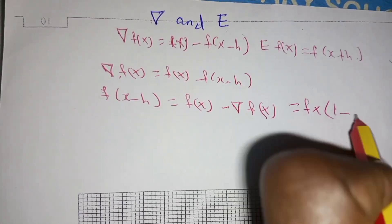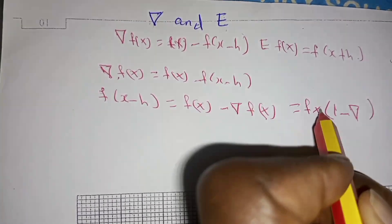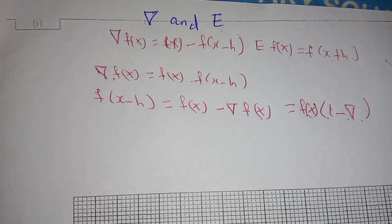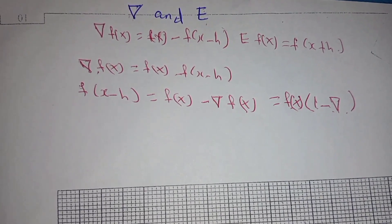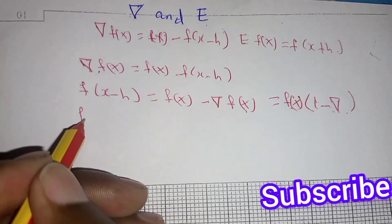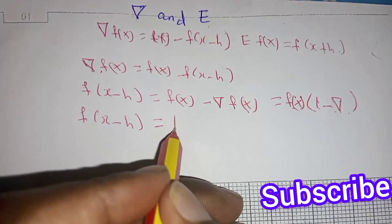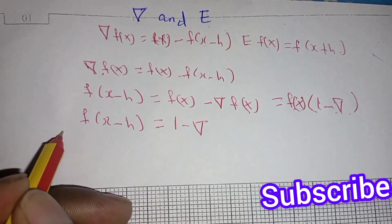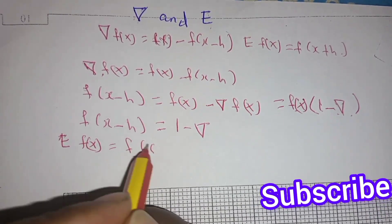We factor out f(x), so we are left with: f(x minus h) equals (1 minus nabla) times f(x), where nabla is the backward difference operator. After factoring f(x) outside the bracket, we can write f(x minus h) equals (1 minus nabla) f(x).